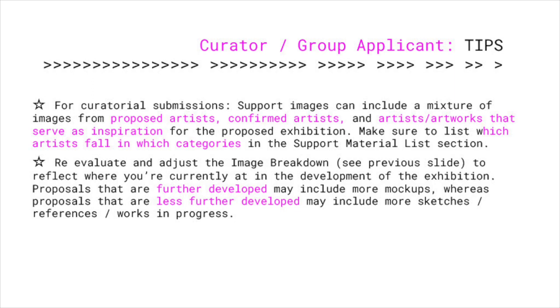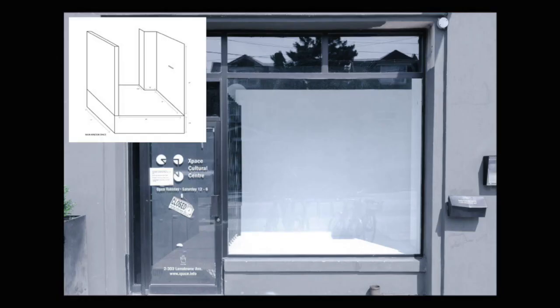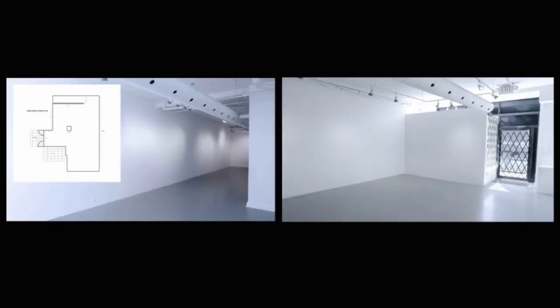Blank templates and floor plans of all three of our physical spaces can be found in the resource section of our website. Please use these to draft mock-ups and hypothetical floor plans of your proposed exhibition. This is the window space. This is the project space — as you can see, it's very much just a standard cube shape. And this is the main space, which has a pillar in the middle and a more rectangular, L-shaped layout.